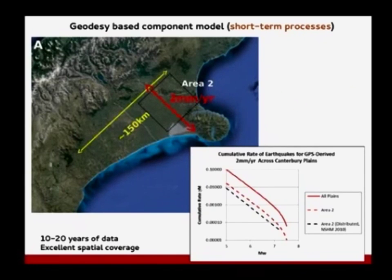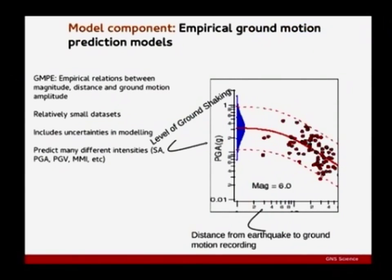The final main component is the empirical ground motion prediction models — called ground motion prediction equations or GMPEs. These are relations between magnitude, distance, and some measure of ground motion amplitude, based on observations. They're typically developed using global data with some local data. They include uncertainties in the modeling, but there is a big data gap: we don't have a lot of near-source data to develop these from. We're getting more all the time, but there's still really not that much. You can predict many different intensity measures with this.